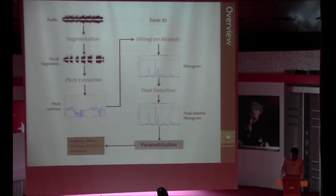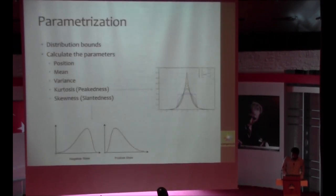Once we have the peaks the last step would be to estimate the parameters. So we consider these five parameters which characterize the shape of a distribution. And yeah the distribution bounds are determined by looking at the valleys. I mean if they are more than 50 cents apart they are bound by 50 cents otherwise they are bound by the valley points.